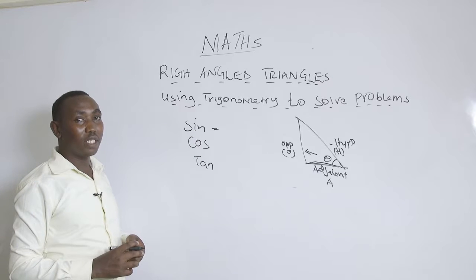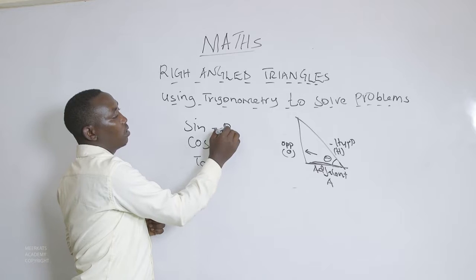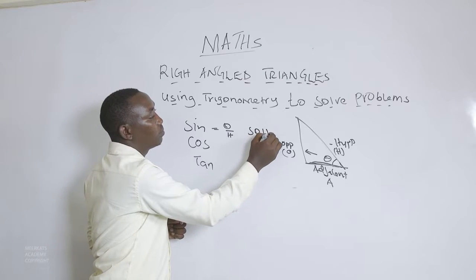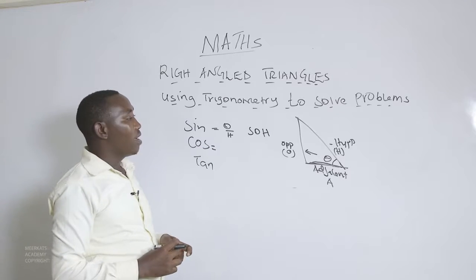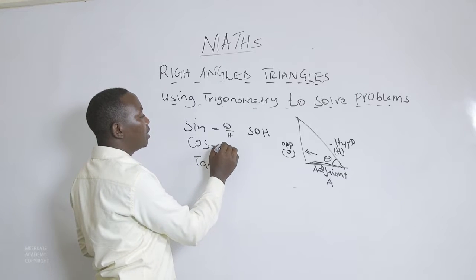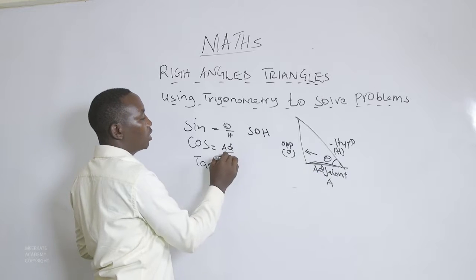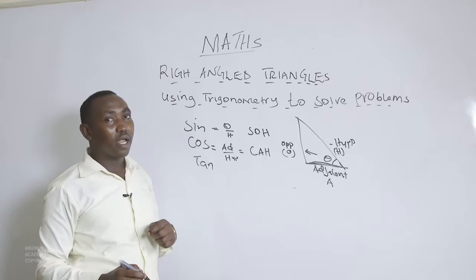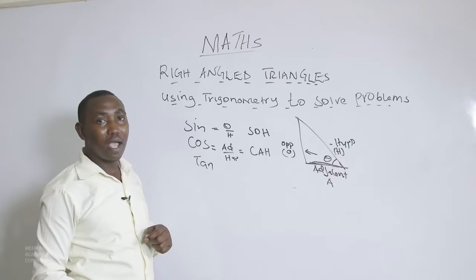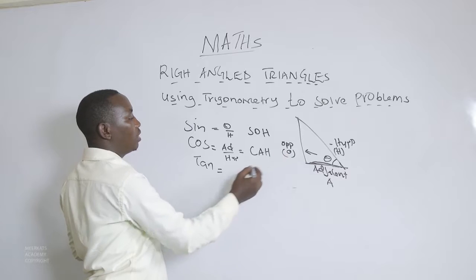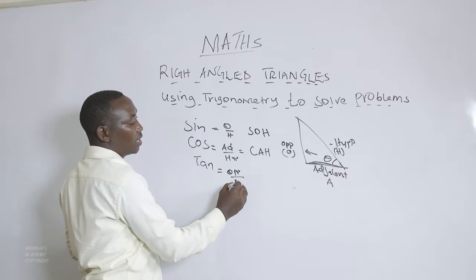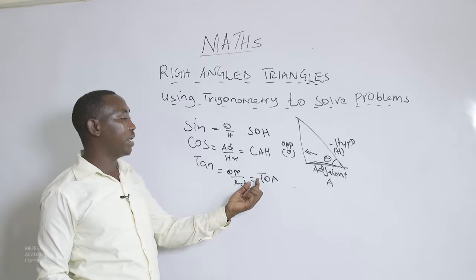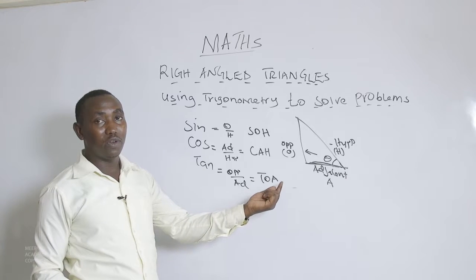If you want to get the sine of theta, it is the opposite over the hypotenuse — giving the acronym SOH. The cosine of theta is the adjacent divided by the hypotenuse — giving CAH. Finally, the tangent of theta is given by the opposite side divided by the adjacent side — giving TOA. So to find the tangent of a given angle, you take the opposite and divide by the adjacent.